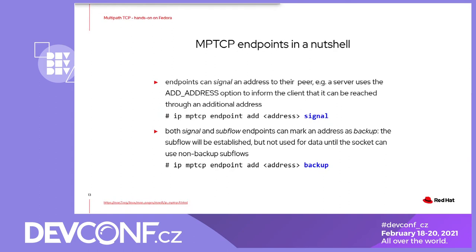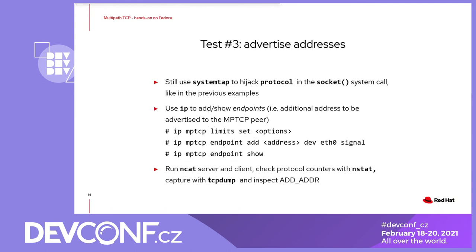In this third example, we will add a signal endpoint in the server and check how the client establishes the join subflow. After the first three-way handshake, the server advertises a new address to the client, and then the client uses this address to set up a new subflow with MP_Join. We will use nstat to check the protocol-wide counter of received Add Address packets in the client namespace, and see that packet with TCP dump right before the MP_Join handshake starts.